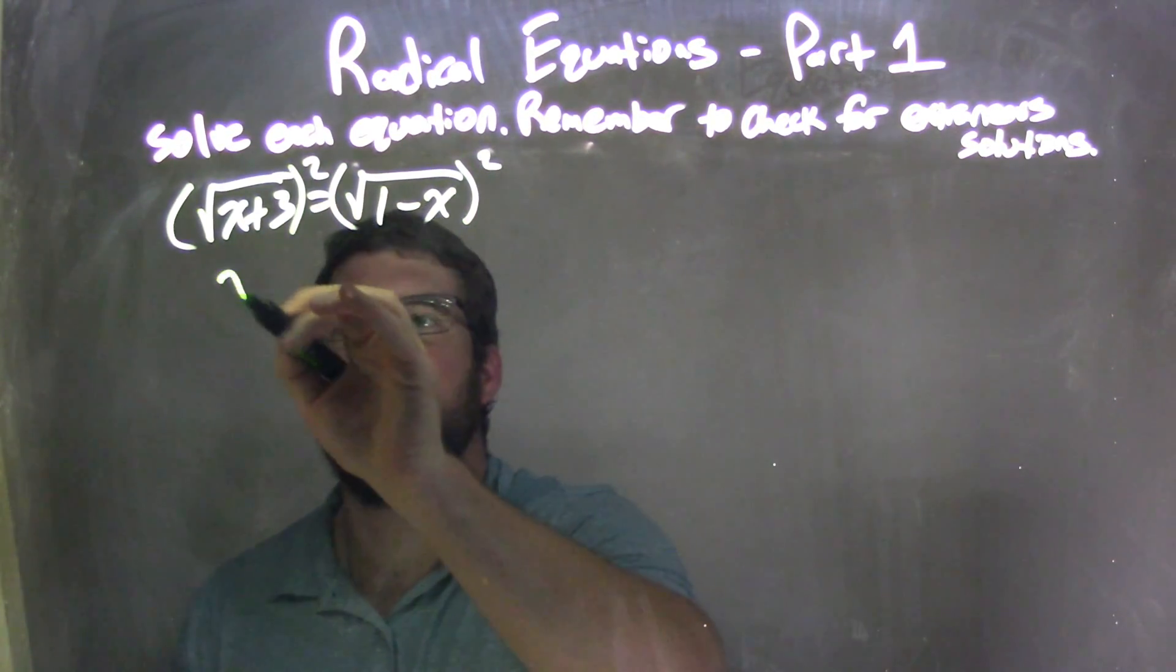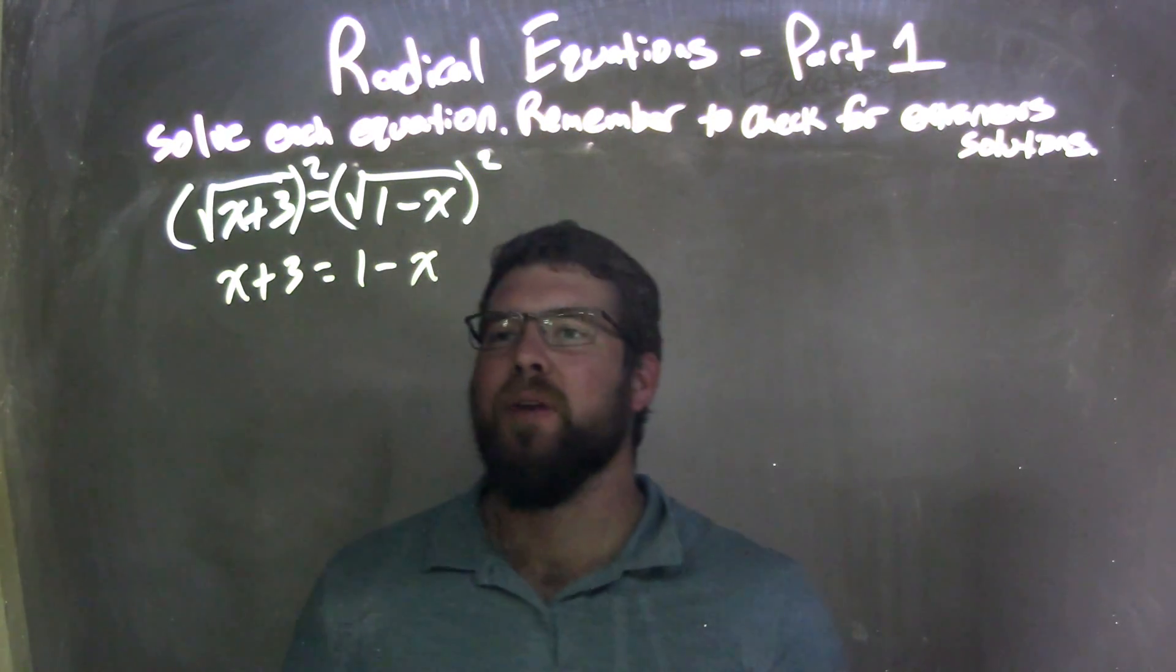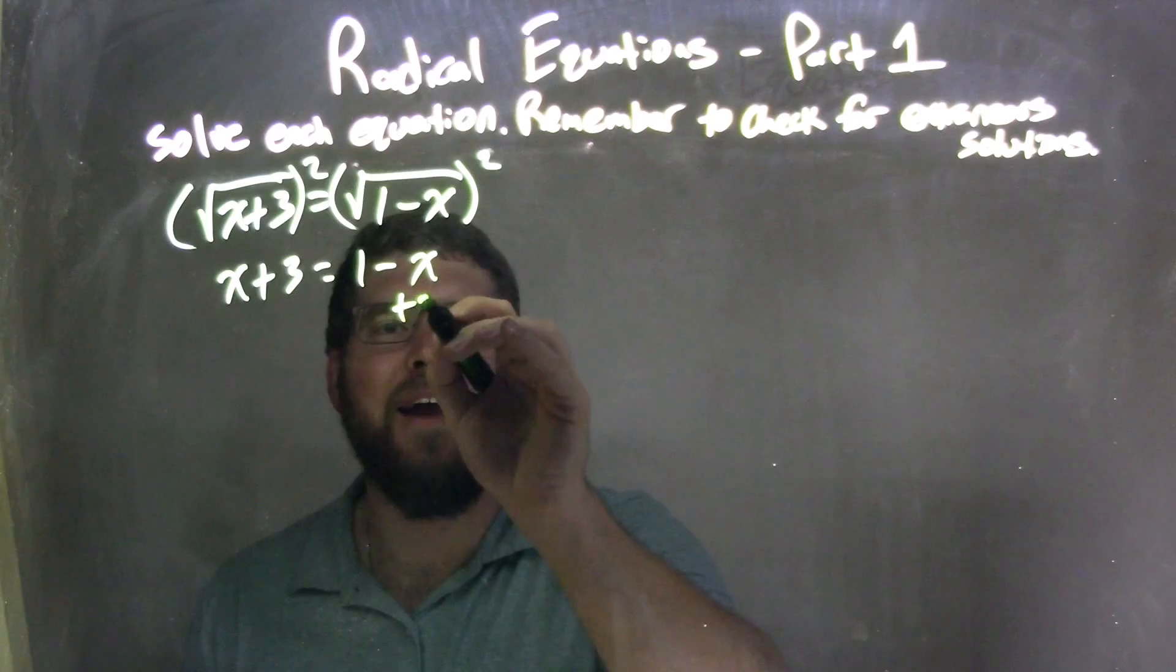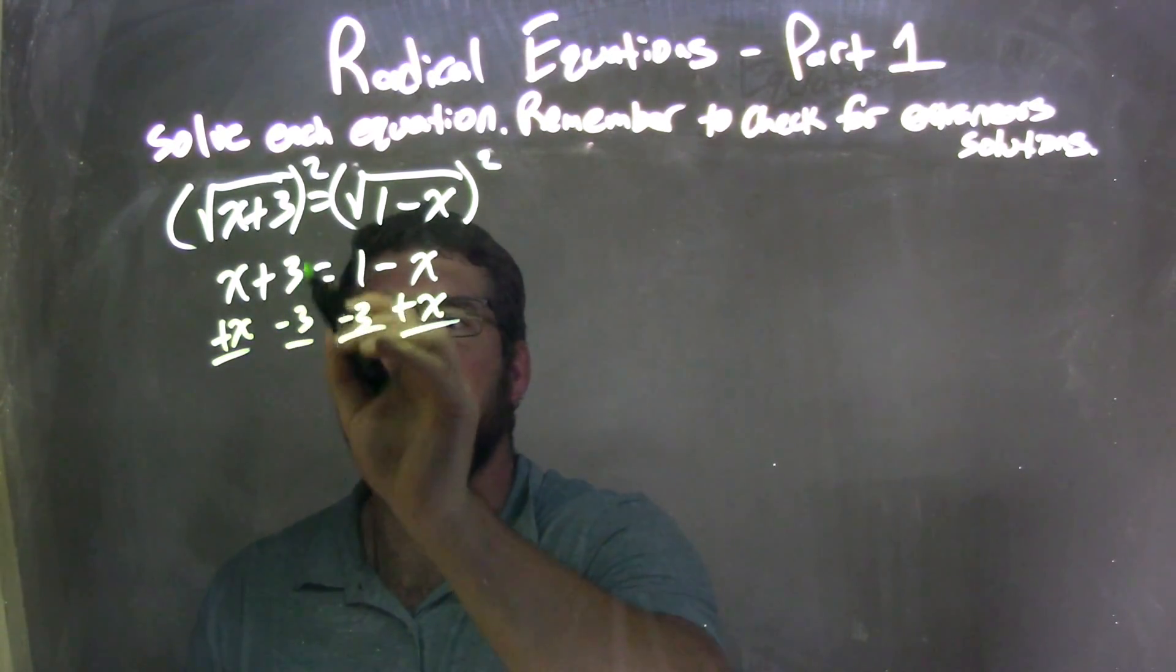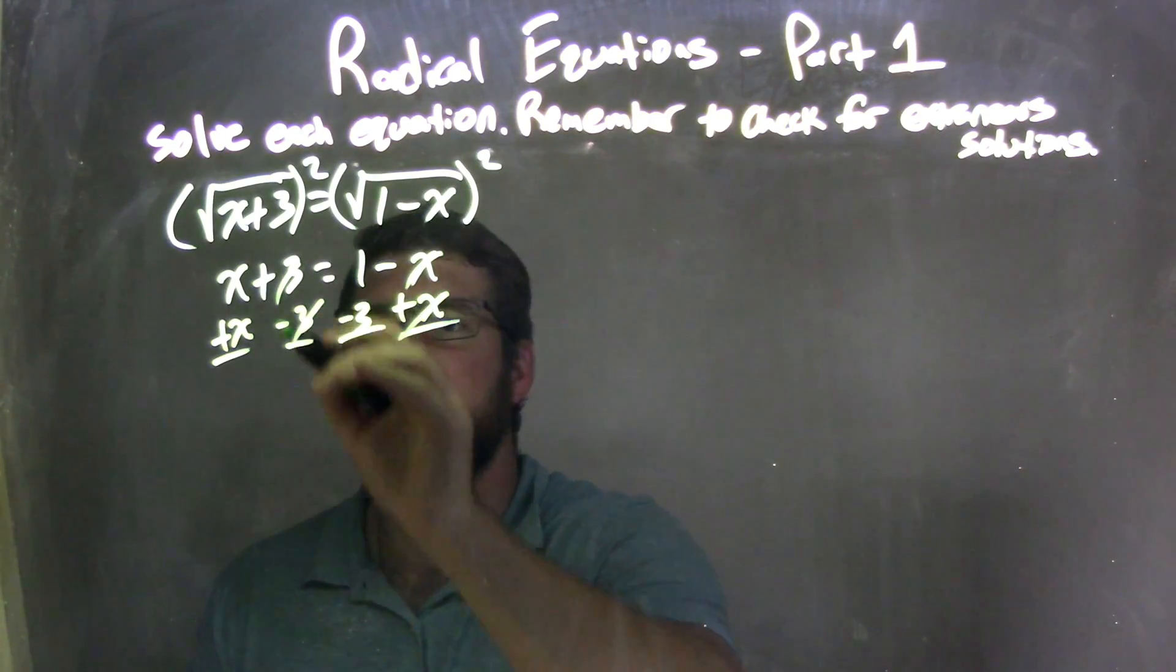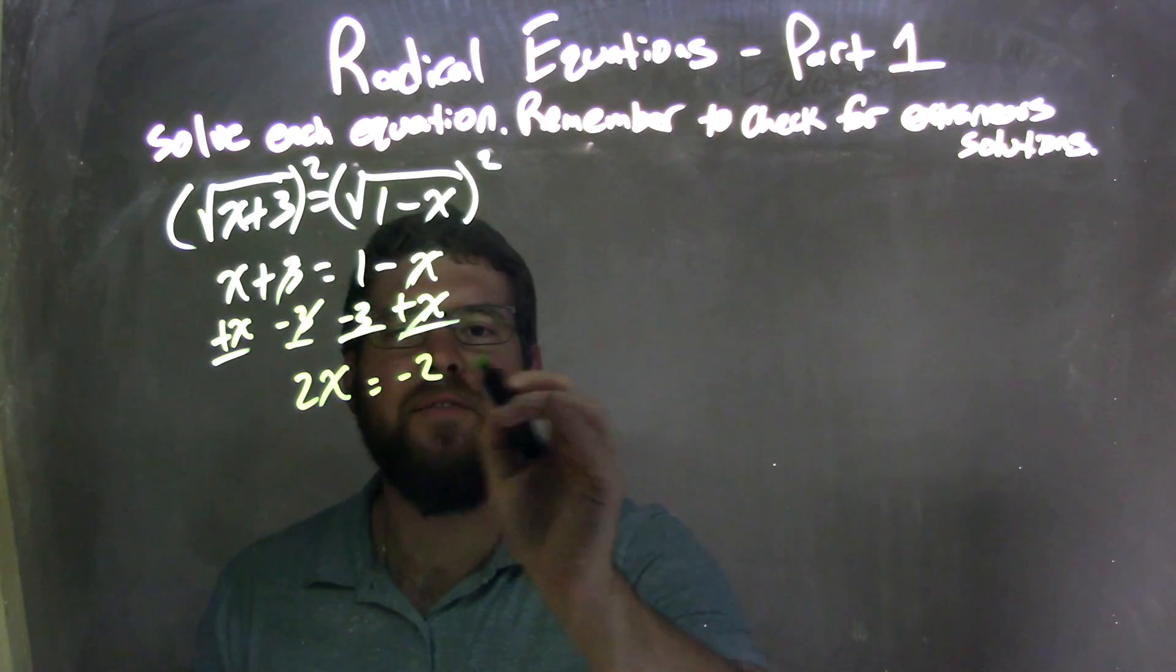Eliminates the square root, giving me x plus 3 on the left, and 1 minus x on the right. Now I'm just adding my like terms. I'm going to add an x to both sides here, and I'm going to subtract 3 from both sides. These 3's cancel, these x's cancel, leaving me with 2x, which is x plus x, equals 1 minus 3 is negative 2.